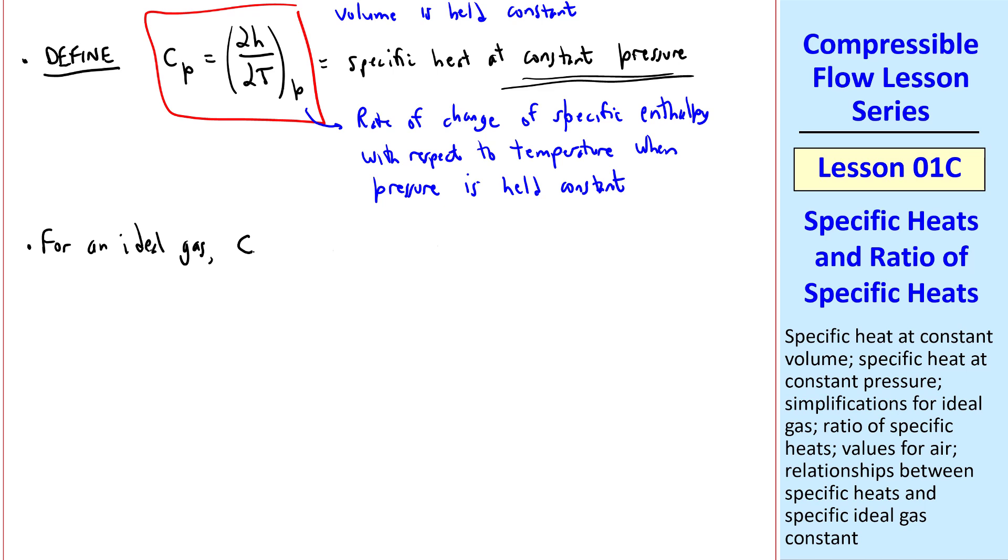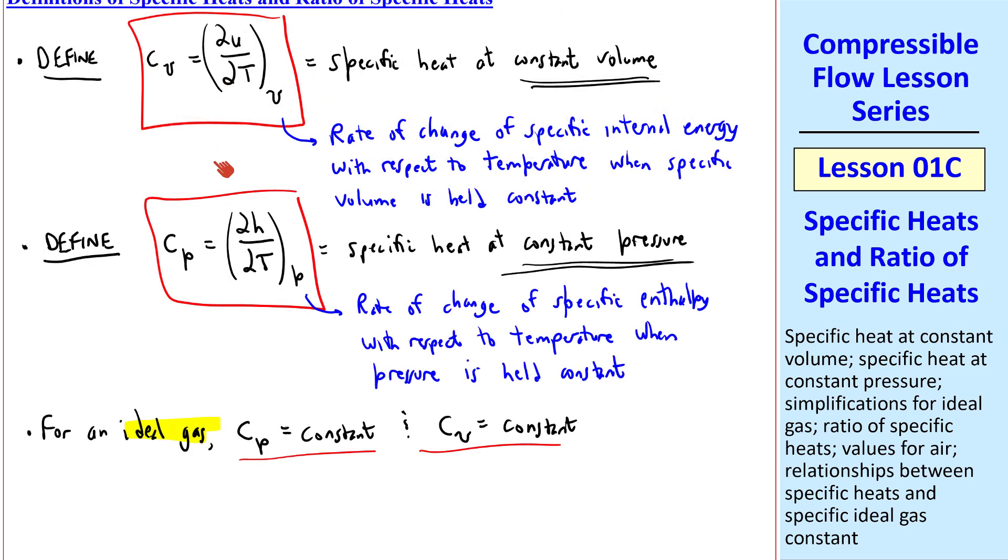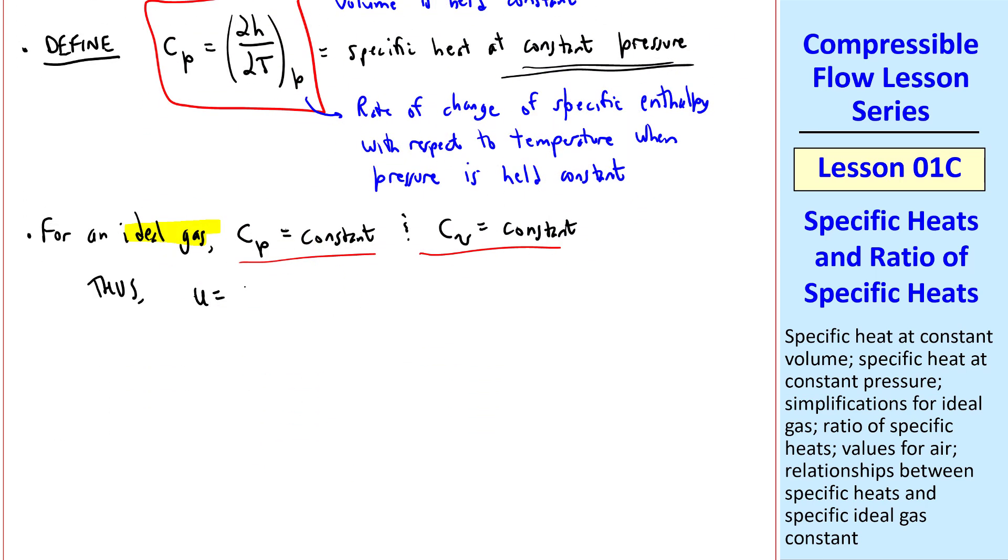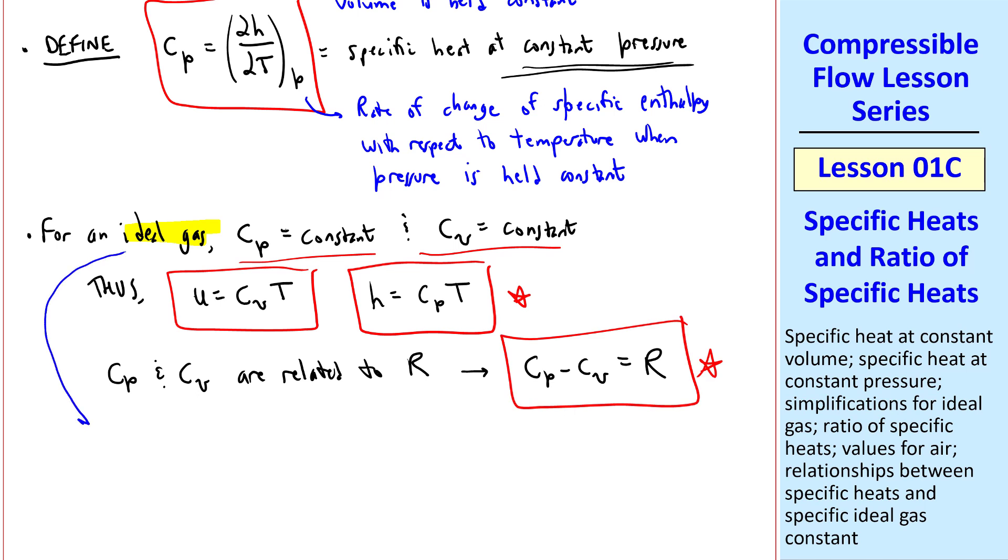For an ideal gas, it turns out that Cp is a constant, and Cv is also a constant. Thus, if you integrate these, when Cp and Cv are constants, U becomes Cv times T, and H becomes Cp times T. It also turns out that Cp and Cv are related to the specific gas constant R. Namely, Cp minus Cv is equal to R. Also for an ideal gas, we define gamma as the ratio of Cp over Cv.